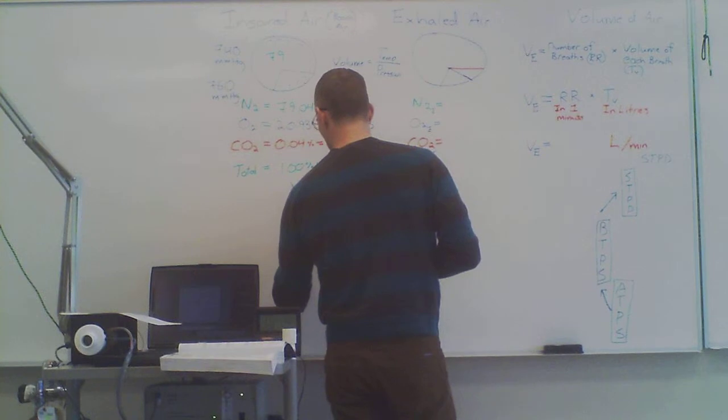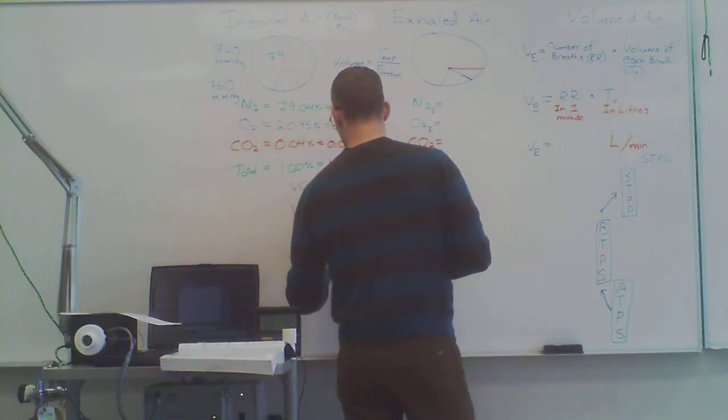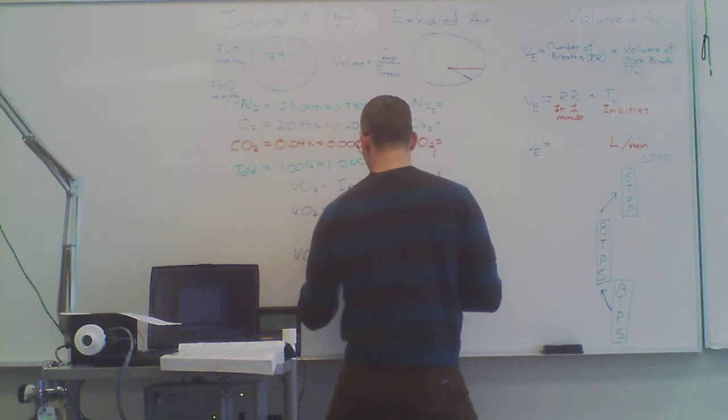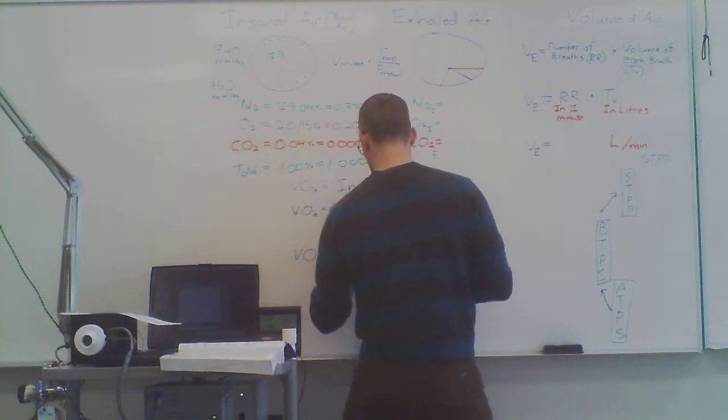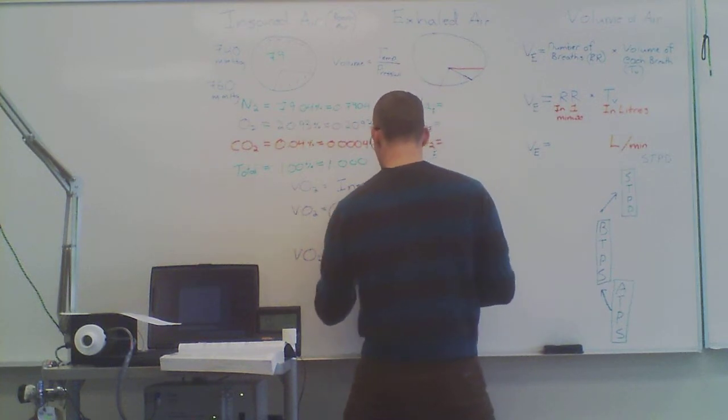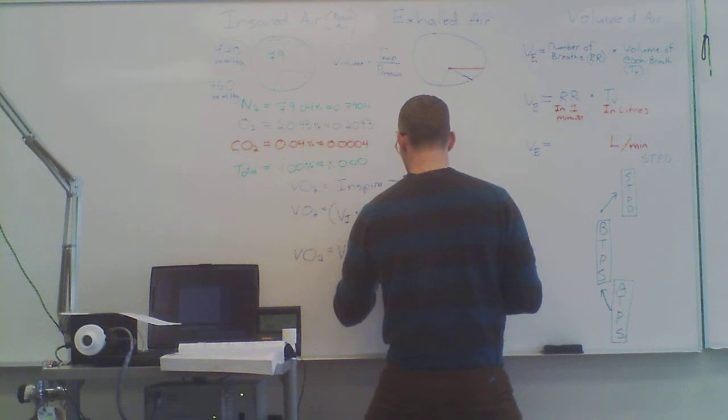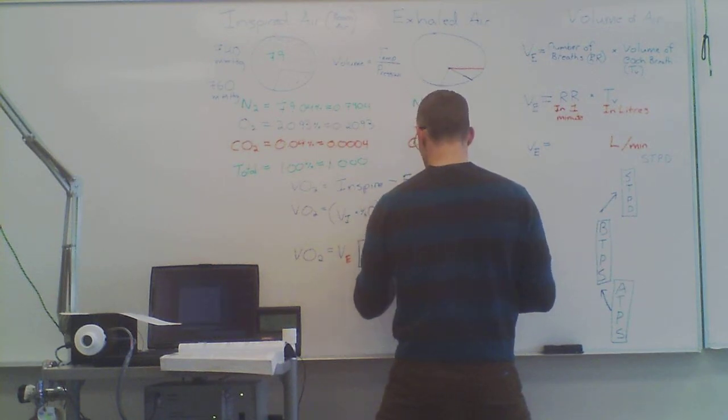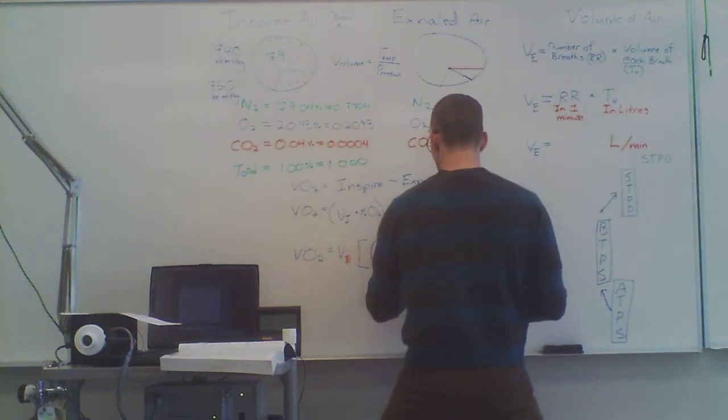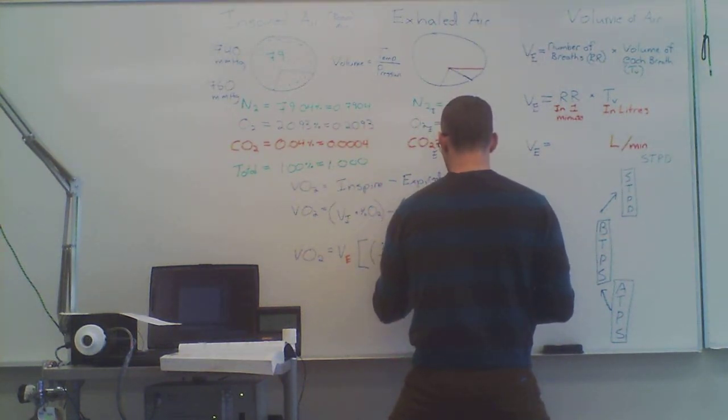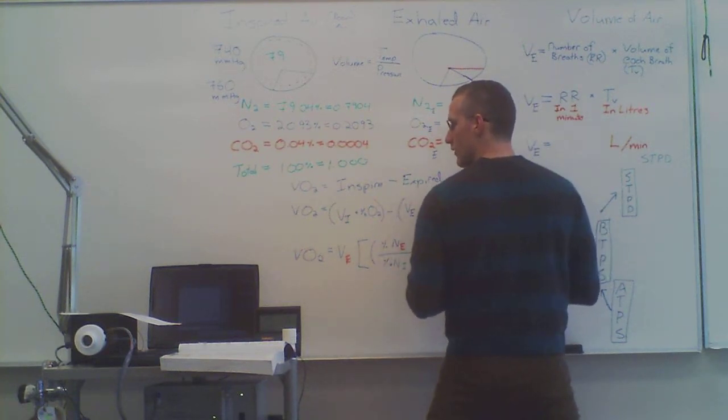So the equation we end up with is called this. VO2 is going to equal the volume of expired air, multiplied by the percentage of nitrogen expired, divided by the percentage of nitrogen inspired, multiplied by the percentage of oxygen inspired.